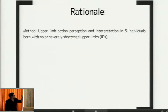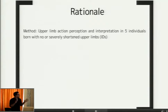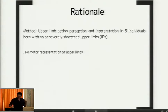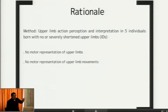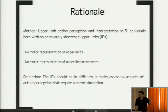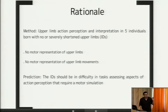To do so, what we did was quite straightforward. We tested the ability to perceive and understand upper limb actions in individuals who are born without upper limbs, or with very short upper limbs. The logic is the following: because these individuals have no upper limb motor representations or motor representations of upper limb movement that they can use to motorically simulate upper limb actions, the expectation of motor simulation theories is that their performance should differ from control participants, at least in tasks that assess aspects of action perception that really require motor simulation. This is the prediction we tested across a range of experiments.